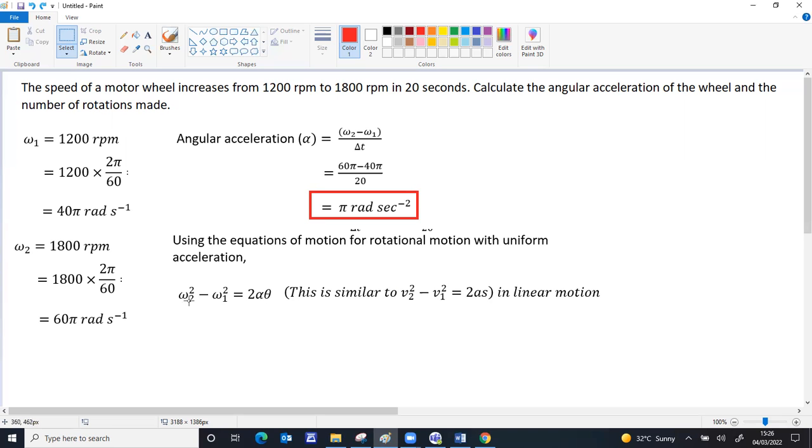You can substitute ω₂ as 60π, ω₁ is 40π, α is π. You can get θ from that. So (60π)² minus (40π)² will be, 60 plus 40 is 100π into 60 minus 40 is 20π. This is equal to 2πθ. Cancellations will give you θ as 1000π.